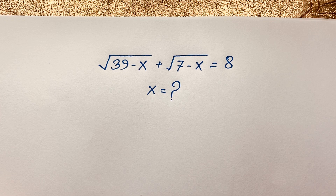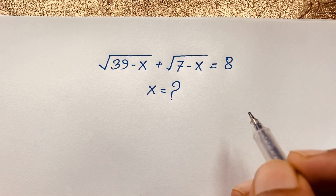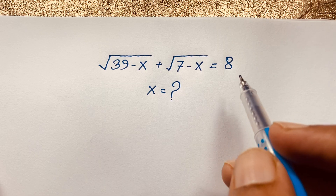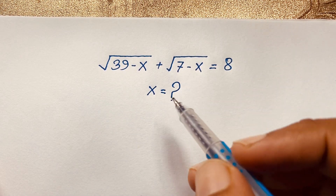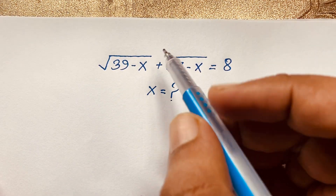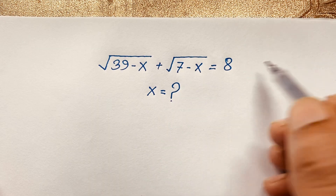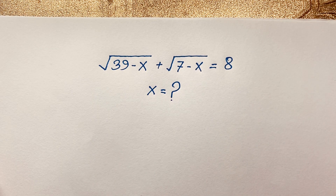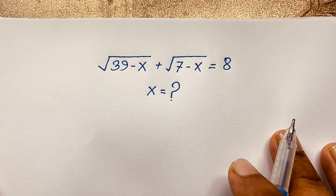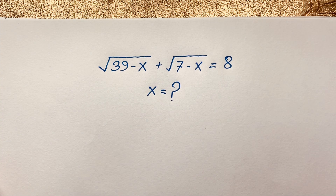Hello everyone, welcome to Rasta's Classroom. Today we have solved an interesting Math Olympiad question. It is a nice radical problem: square root of (39 minus x) plus square root of (7 minus x) is equal to 8. What is x? How to solve this interesting math problem?